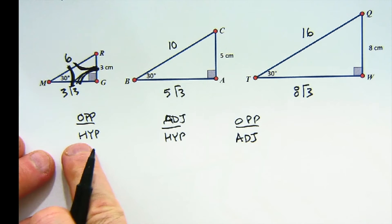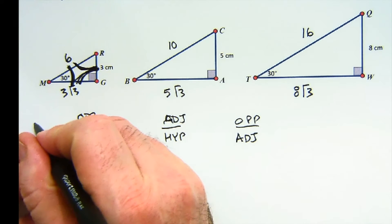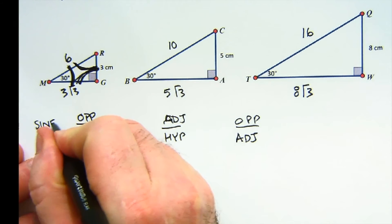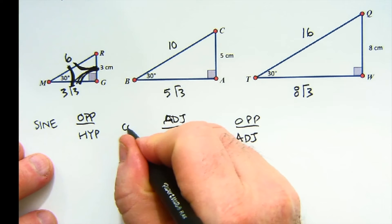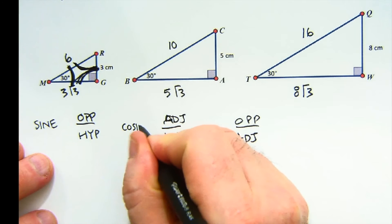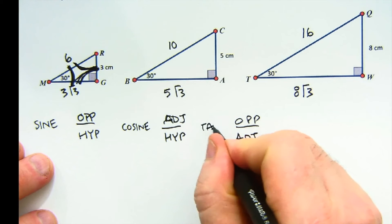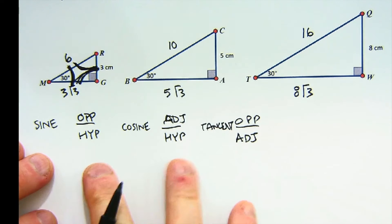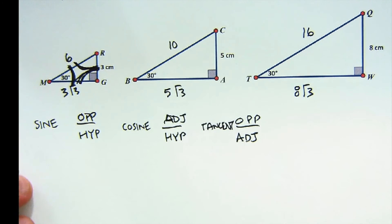These three ratios we give them a name. The first one is called sine. The second one is called cosine. And the third one is called tangent. These ratios provide us a relationship between the sides of a right triangle and its angles.